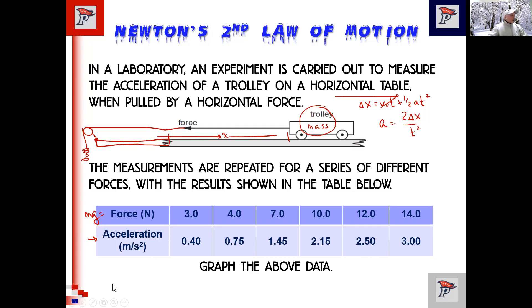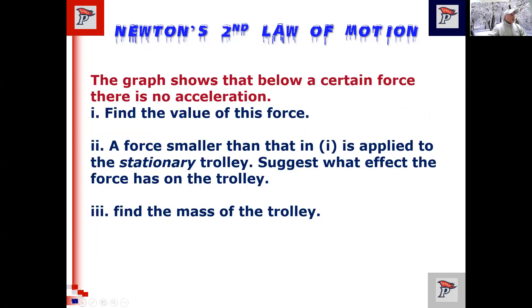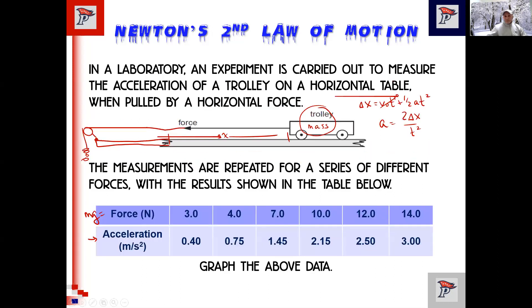So the first part is we're going to graph this data above. I know, well, I'll come right back to it, but I just want to show you what it would say next. So the graph shows that below a certain force, there's no acceleration. Find the value of this force. A force smaller than that is applied to the stationary trolley. Suggest what effect the force has on the trolley. Find the mass of the trolley. So these are the kind of questions. You'll see like the two I assigned to you today for homework. And I think the other one that's on here, maybe there's two on here. It essentially asks you the same question each time. To do it first, you've got to graph it. So one of those three ways, hopefully you can graph it.